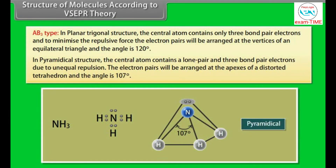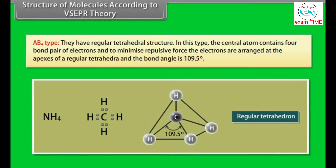In an AB4-type pyramidal structure, the central atom contains one lone pair and three bond pair electrons. Due to unequal repulsion, the electron pairs are arranged at the apexes of a distorted tetrahedron and the angle is 107 degrees. In a regular tetrahedral AB4-type structure, the central atom contains four bond pairs, and the electrons are arranged at the apexes of a regular tetrahedron with a bond angle of 109.5 degrees.